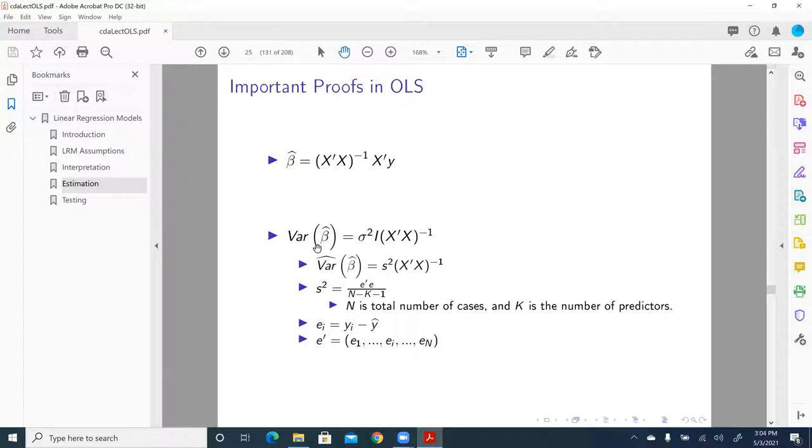Now let's look at the variance of beta hat, or the estimated OLS parameter. This result quite often is used to make statistical inference. So the variance of beta hat of beta OLS estimates is equal to sigma square. This term is an identity matrix. And then multiply X prime X inverse.